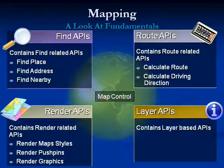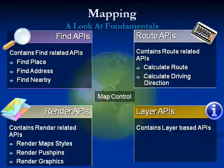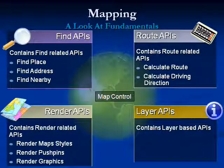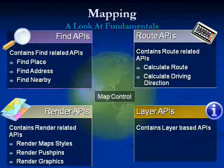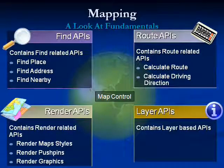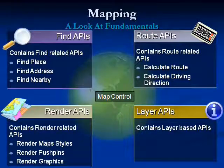Basically, there's a series of things we want to be able to do with mapping. We want to find things — places, addresses, something nearby, like a coffee shop, which was very important this morning. We also want to be able to render things, change the map style — one advantage of LiveMaps is you can get a bird's eye view and look at rooftop views. We want to do routes, and use layers to put data on the map.